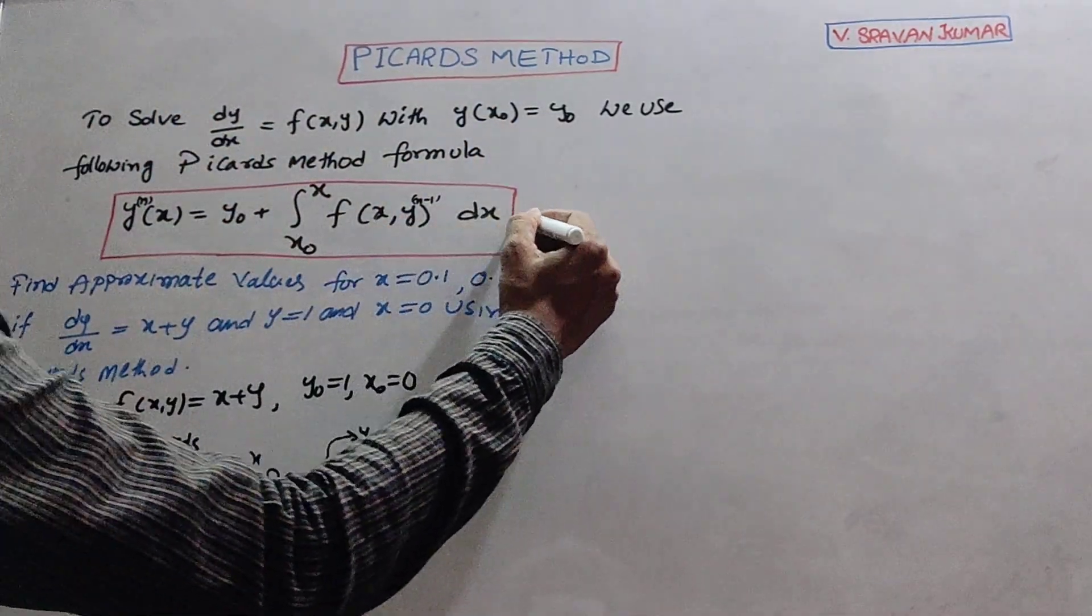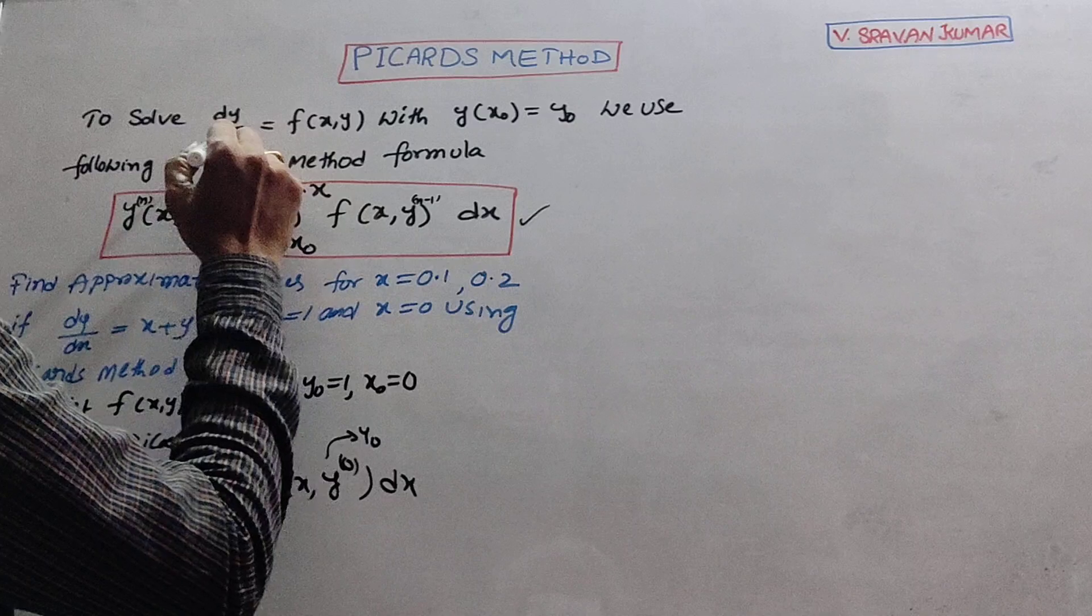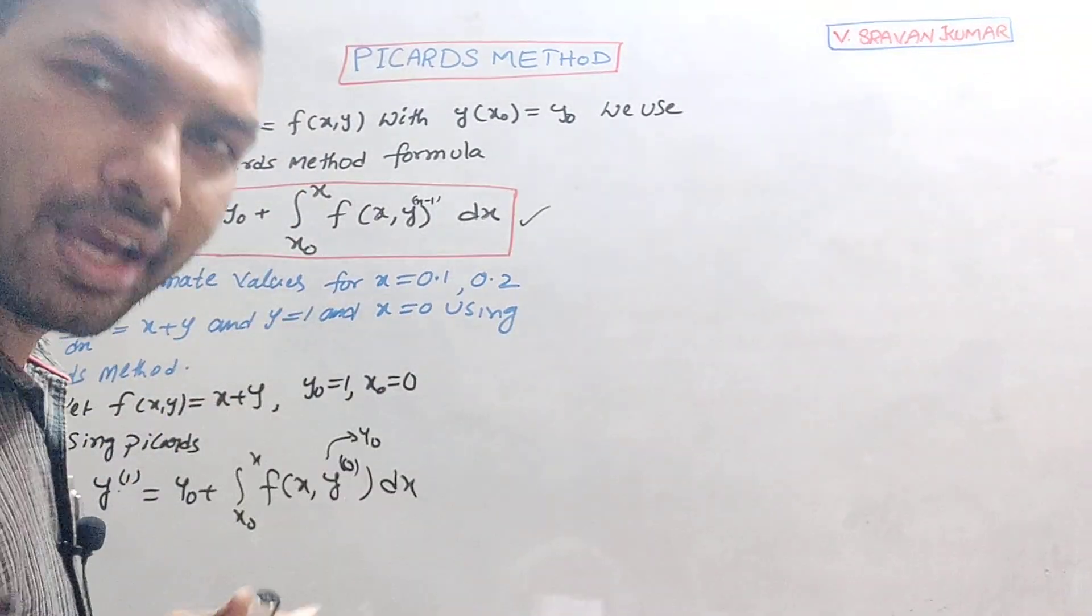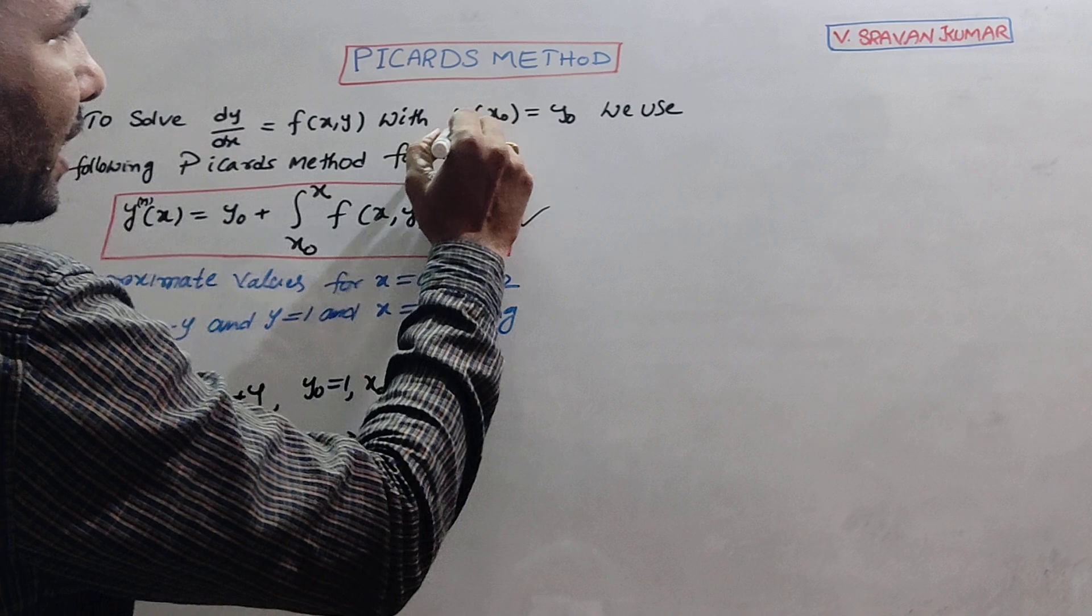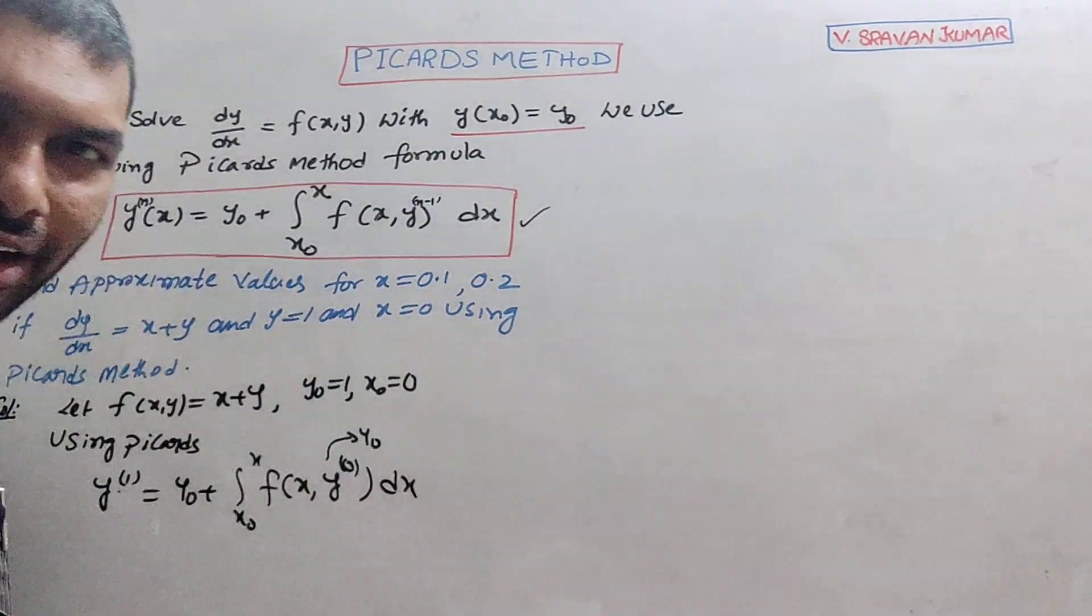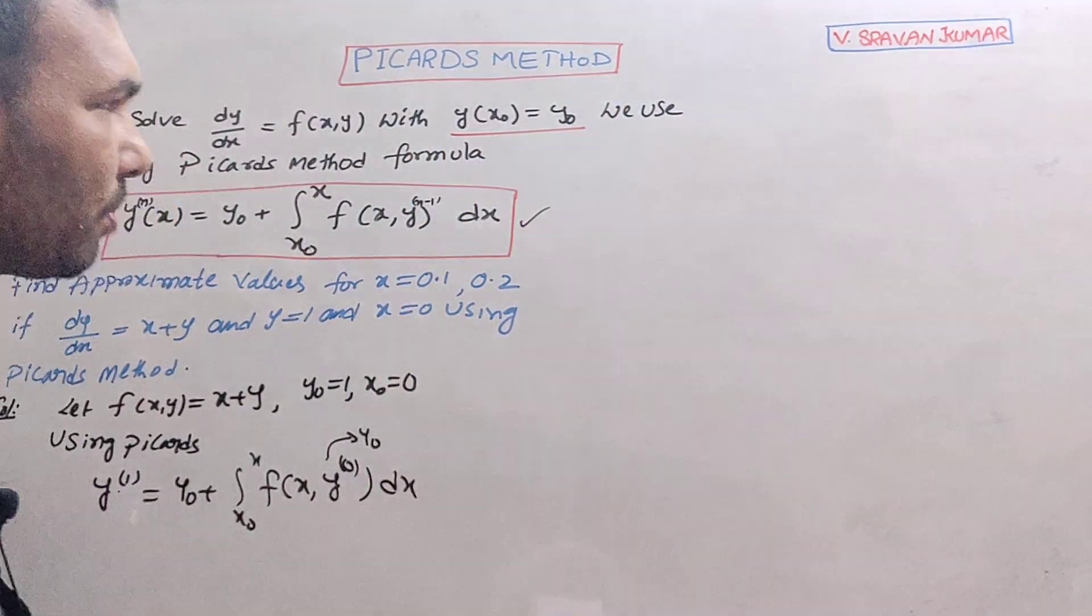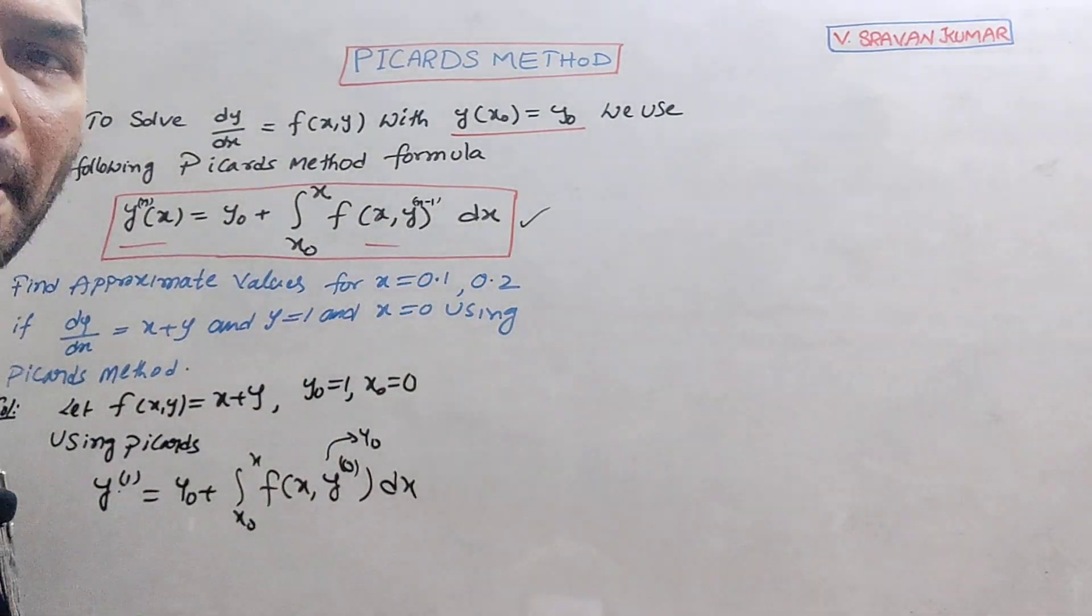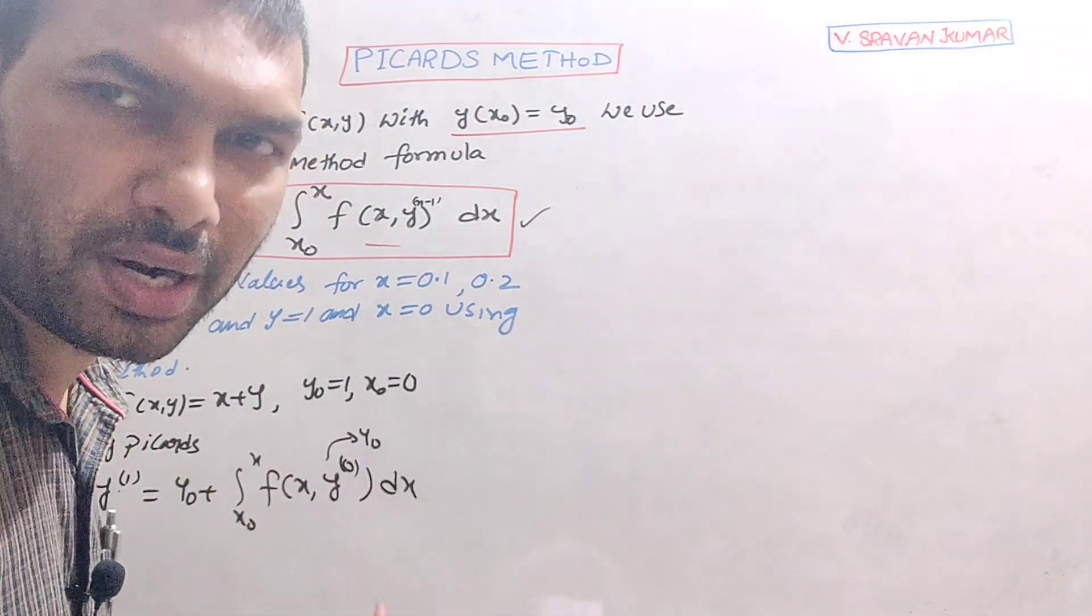This formula - this is the first order, first degree differential equation: dy/dx equal to f(x,y). To solve this, we are going to use this formula. Picard's successive approximation method.